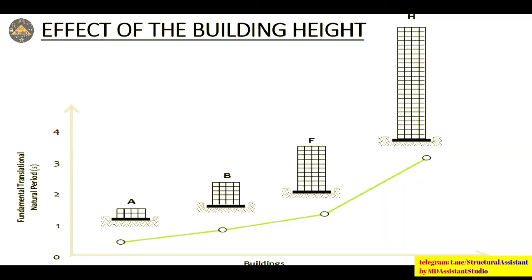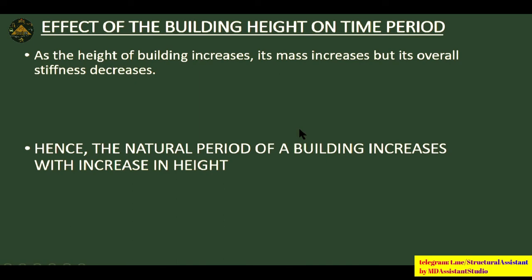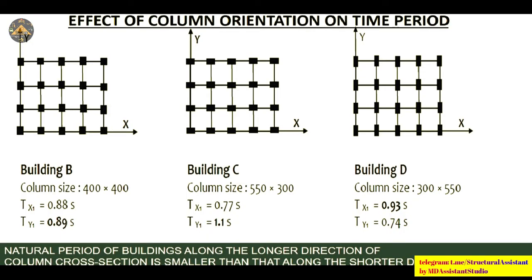As building height increases, the fundamental natural period increases. Building A has a very low natural period while taller buildings have a much higher natural period. As height increases, mass increases but overall stiffness may decrease, so the natural period of the building increases with increasing height.